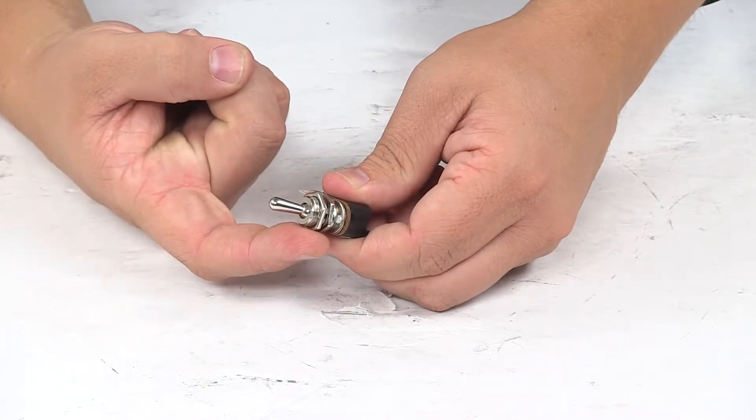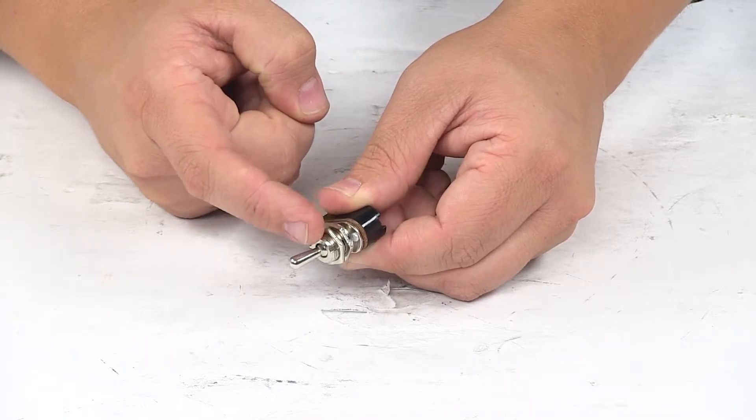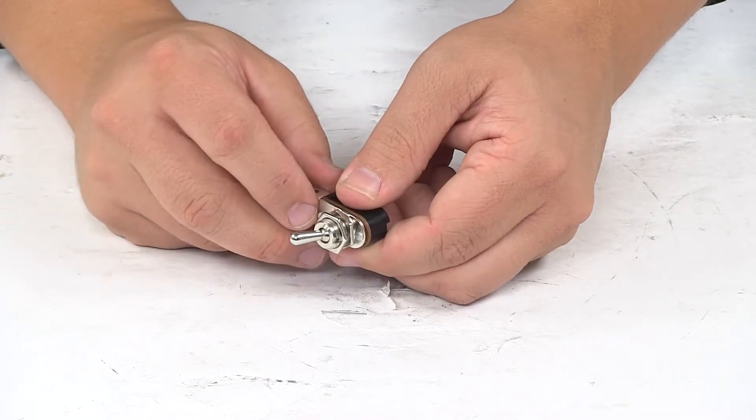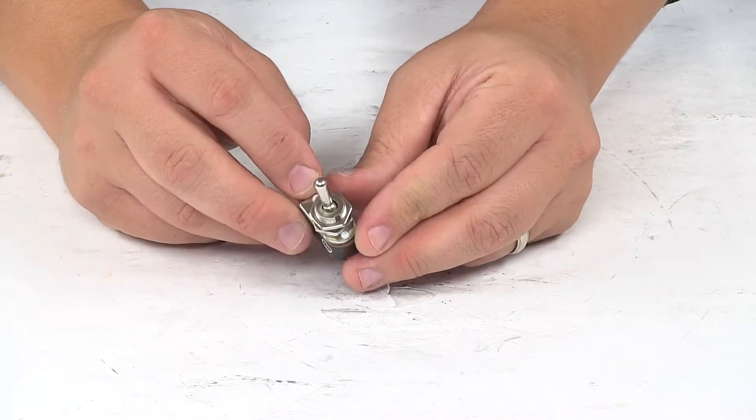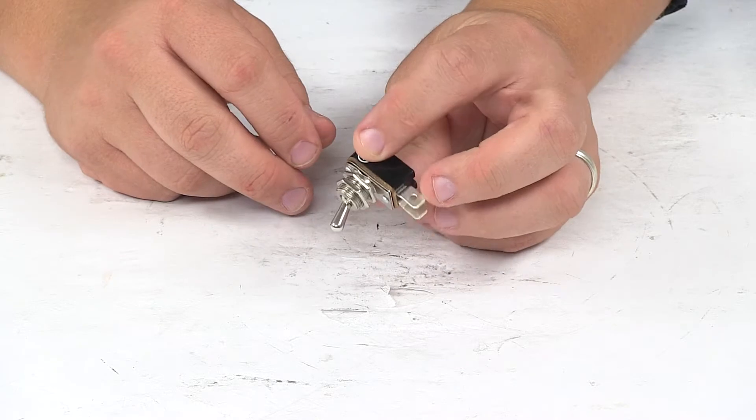It comes with the necessary mounting nuts and it has that threaded stem right there. The diameter on that is about 7/16 to a half inch in diameter, so this does require a 7/16 to a half inch diameter hole at the installation area.